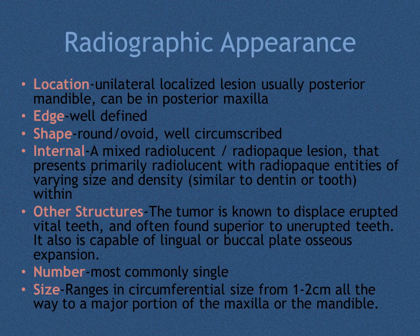Radiographic findings: The lesion is commonly a unilateral, localized lesion in the posterior mandible, however it can occur in the posterior maxilla as well. It is typically associated superior to unerupted teeth. The edge is well-defined and the shape is round and well-circumscribed. Internally, it presents as a mixed radiolucent-radiopaque lesion, primarily radiolucent with radiopaque entities of varying size and density within.